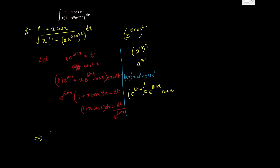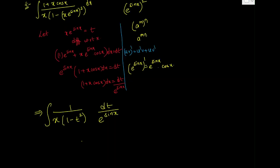Substituting into the integral: (1 + x·cos x)·dx becomes dt/e^(sin x). The denominator x·e^(sin x) is our t. So the integral becomes ∫ 1 / [t·(1 - t²)] dt.